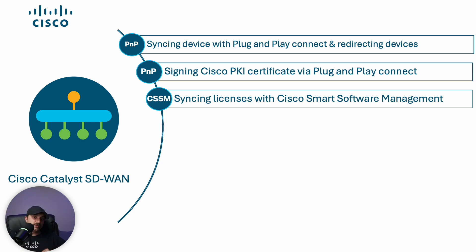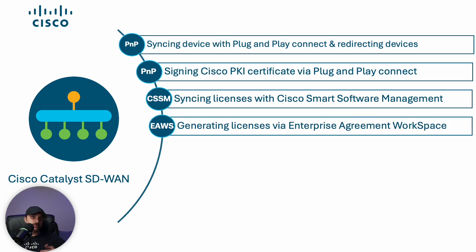Besides being important parameters for direct integration with other Cisco applications, for customers with a Routing and SD-WAN Enterprise Agreement, or EA, suite, smart account and virtual account play a crucial role in license generation. Users should navigate to the Enterprise Agreement workspace, select the right smart account and virtual account where the EA suite is delivered, and utilize the license generation workflow to generate the necessary licenses for smart licensing and license management in Catalyst SD-WAN Manager.